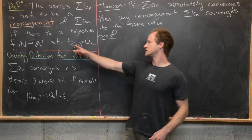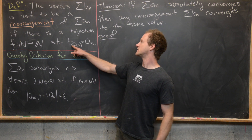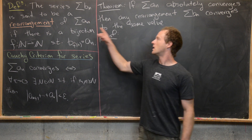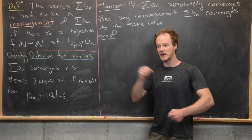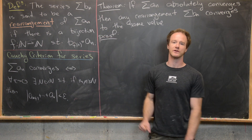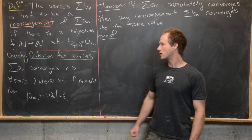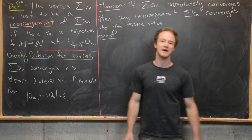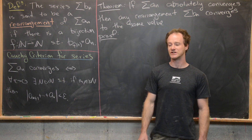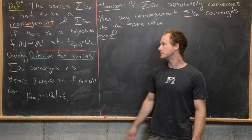In other words, all of the terms of the series B are the same as the terms from series A but they've been moved around a little bit. And how have they been moved around? Well, they've been moved around via this bijection — that's how you do that carefully.